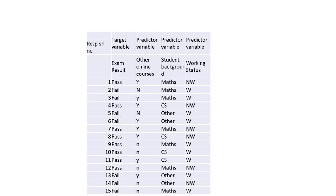Let us look at this data: the target variable is exam result — pass or fail — and the predictor variables are other online courses (yes/no), student background (mathematics, computer science, others), and working status (working/not working). Out of 15 students, 8 pass and 7 fail. For working status, 9 students are working and 6 are not working.